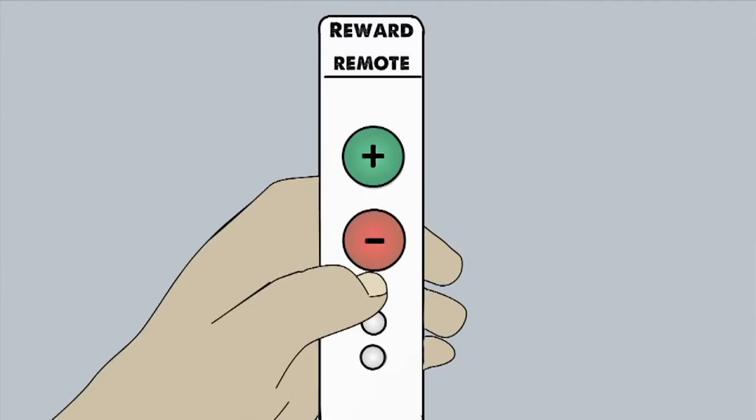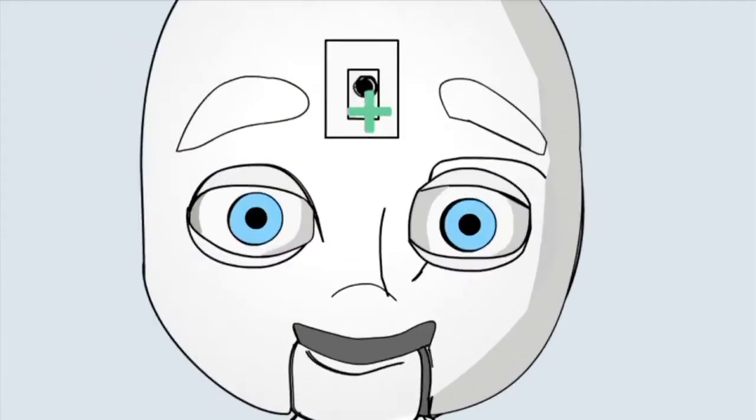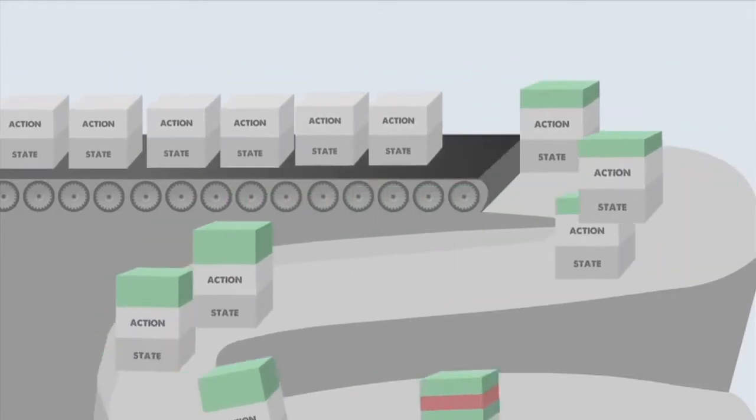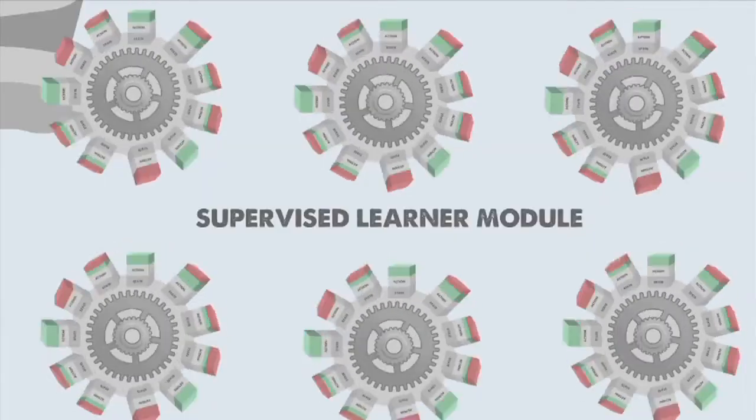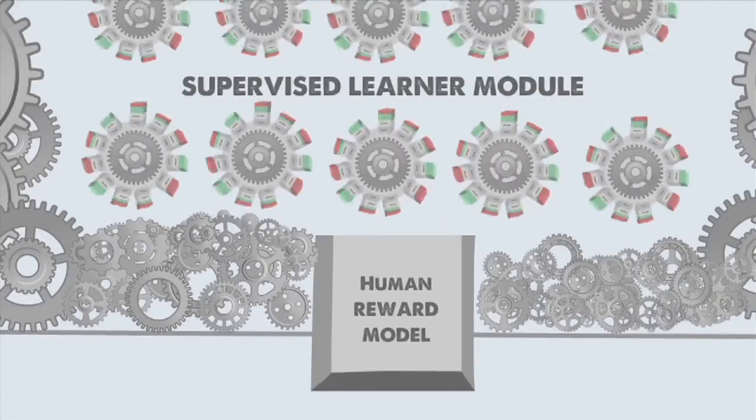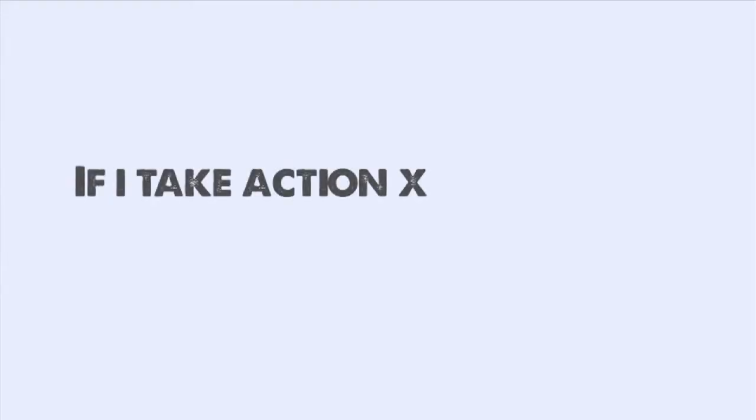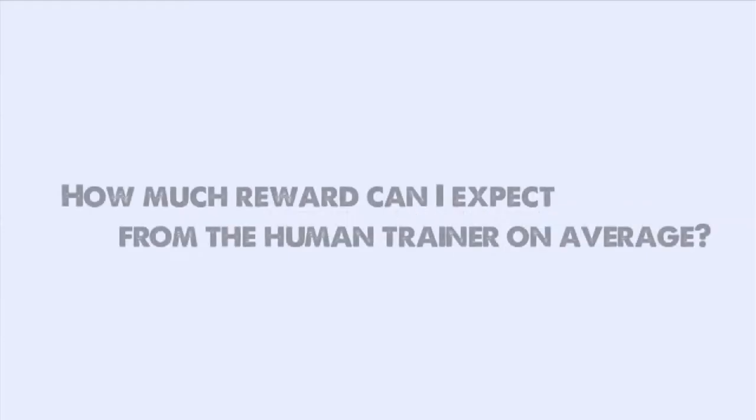Each of these state-action pairs can receive shares from multiple reward signals. A state-action pair and its reward sum create a learning sample for the supervised learner module, which in turn uses all of the samples it takes in to create a model of human reward. If I take action X while on task state Y, how much reward can I expect from the human trainer on average?